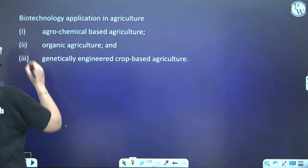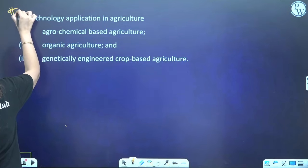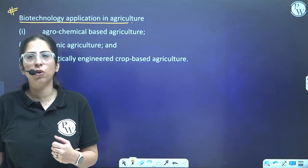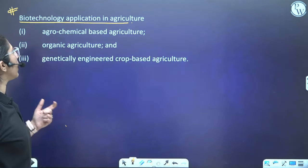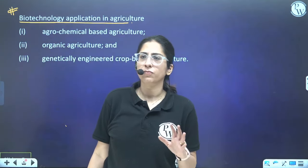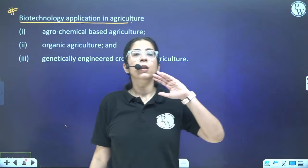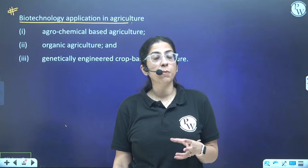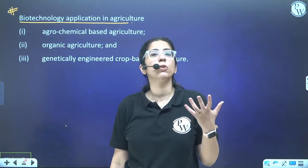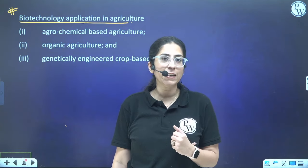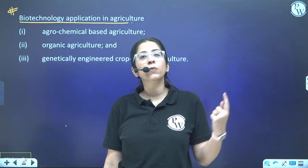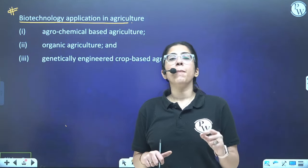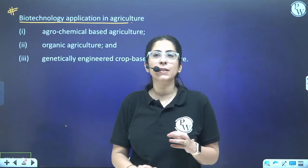Now we are going to start with biotechnology application in agriculture. Why did this come into existence? The population is very high and so the demand is also very high, whereas the supply is very less. Scientists were working to balance supply and demand. The first step they followed was agrochemical-based agriculture.